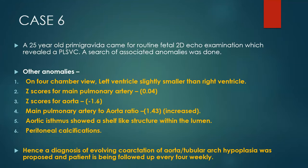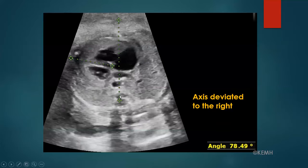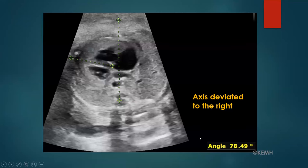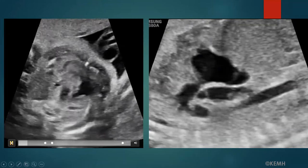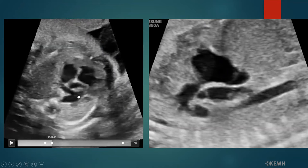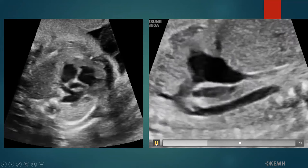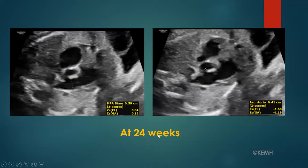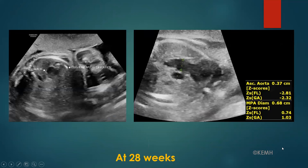Case 6 is a 25-year-old primigravida whose fetus was found to have PLSVC. On detailed evaluation, the PLSVC was to the left of the pulmonary artery, the cardiac axis was deviated to the right, and the ascending aorta and aortic arch appeared small. The ascending aorta was smaller than the main pulmonary artery with a small left ventricular outflow tract, and a shelf-like structure was noted at the aortic isthmus. At 24 weeks, the Z-score of the ascending aorta was -1.6, and at 28 weeks it further reduced to -2.8. There was also incidental fetal peritoneal curvilinear calcification adjacent to the stomach. A working diagnosis of evolving coarctation of the aorta or aortic arch hypoplasia was made.